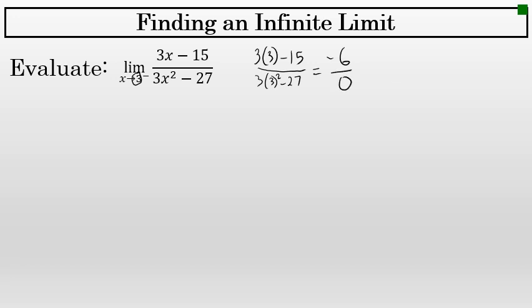This result, negative 6 over 0, is the form of a non-zero value over 0, and that implies that at x equals 3, the graph would have a vertical asymptote. So the limit as x approaches 3 from the left does not exist, but it could be described as infinity or negative infinity, because as the graph approaches this asymptote from the left, it will rise without bound or fall without bound.